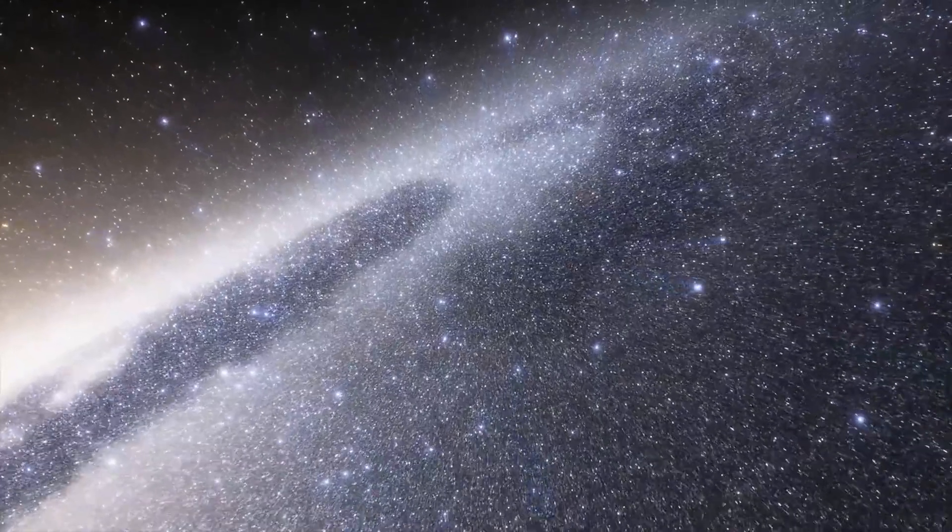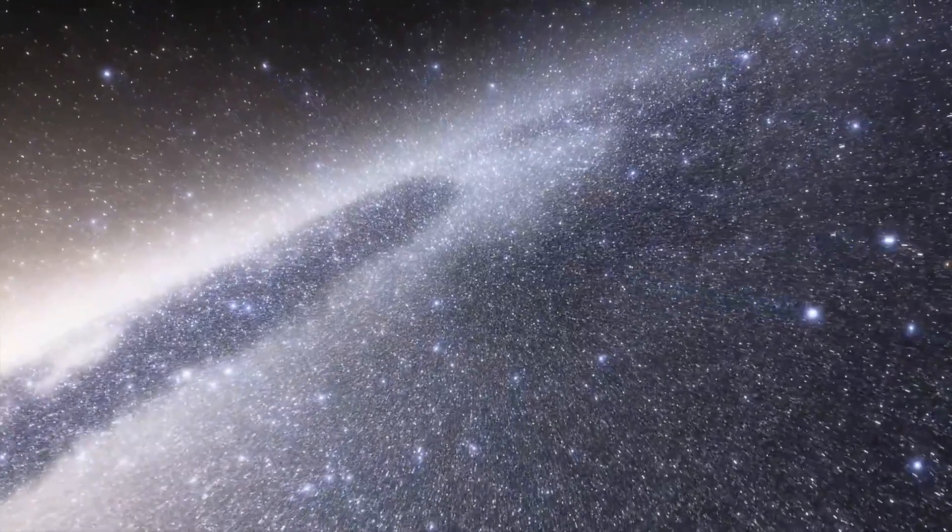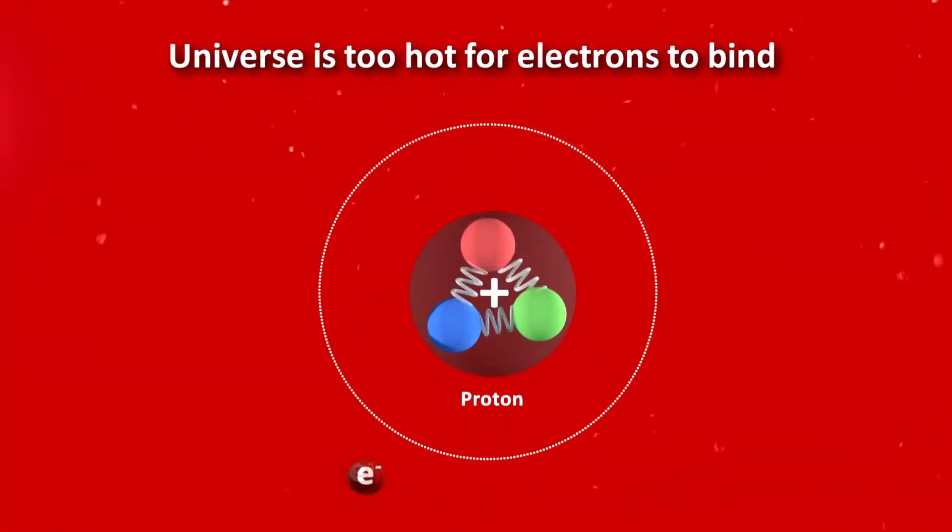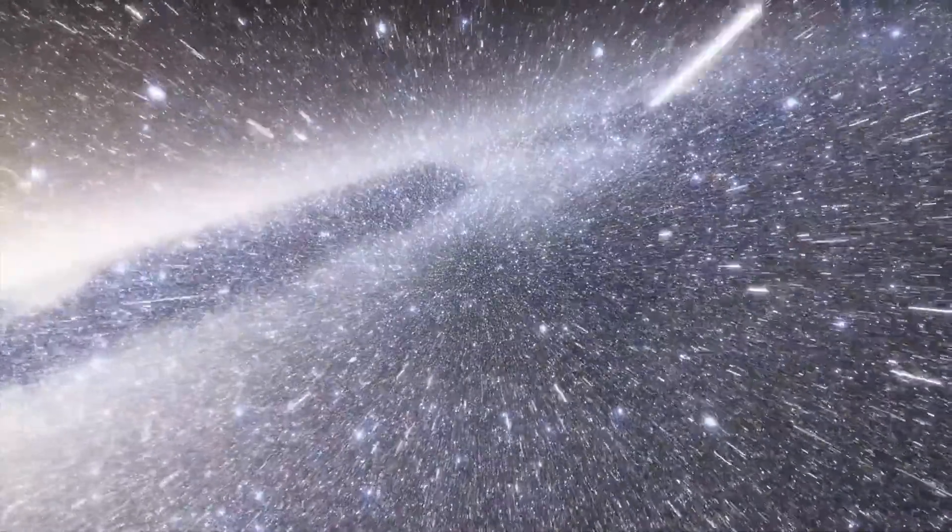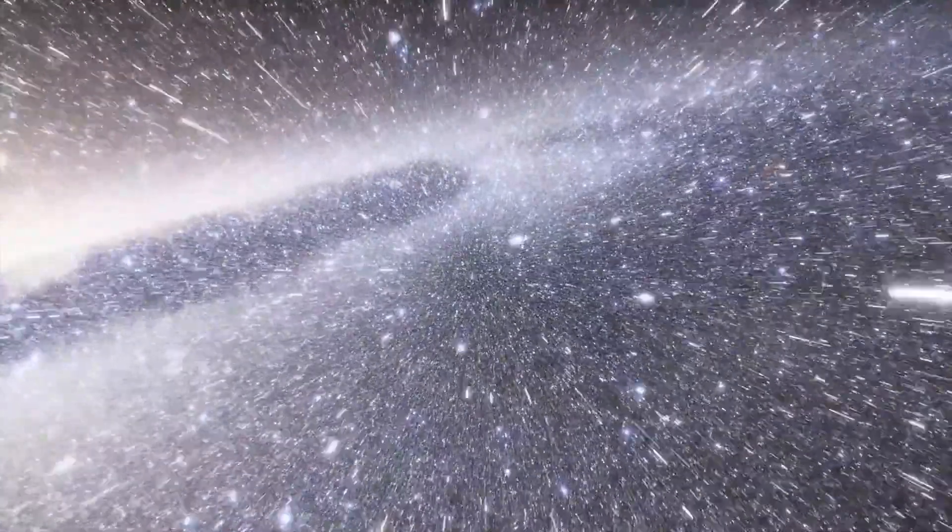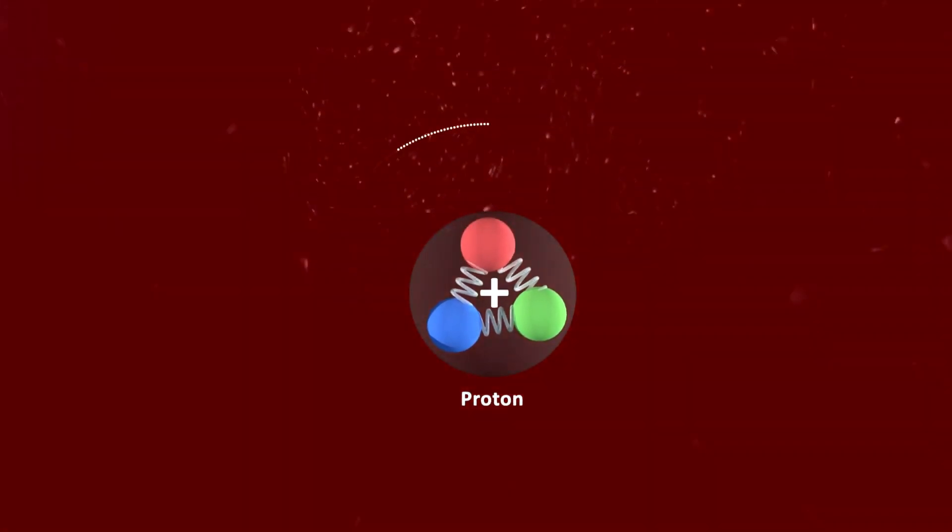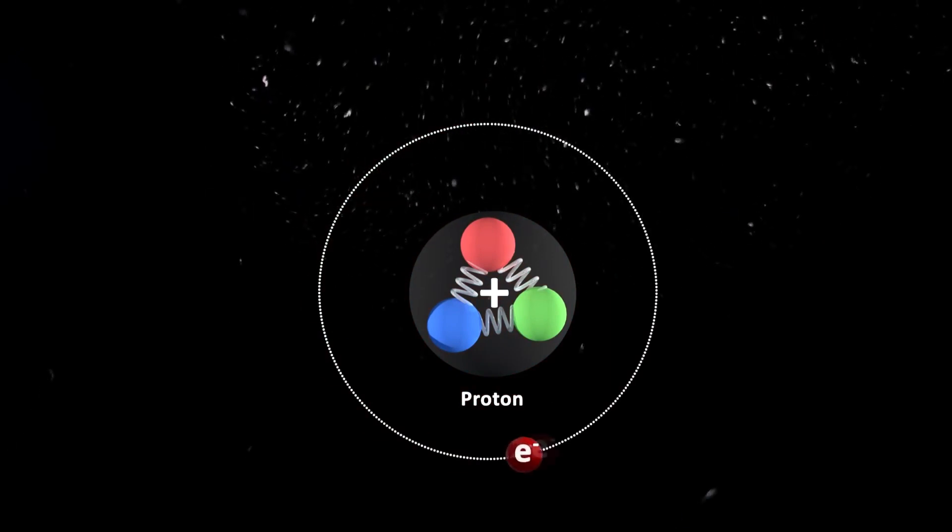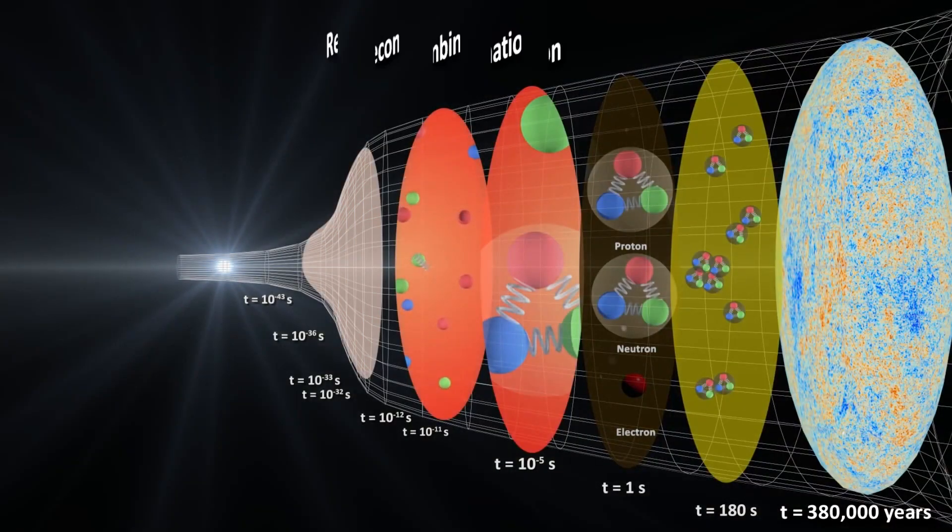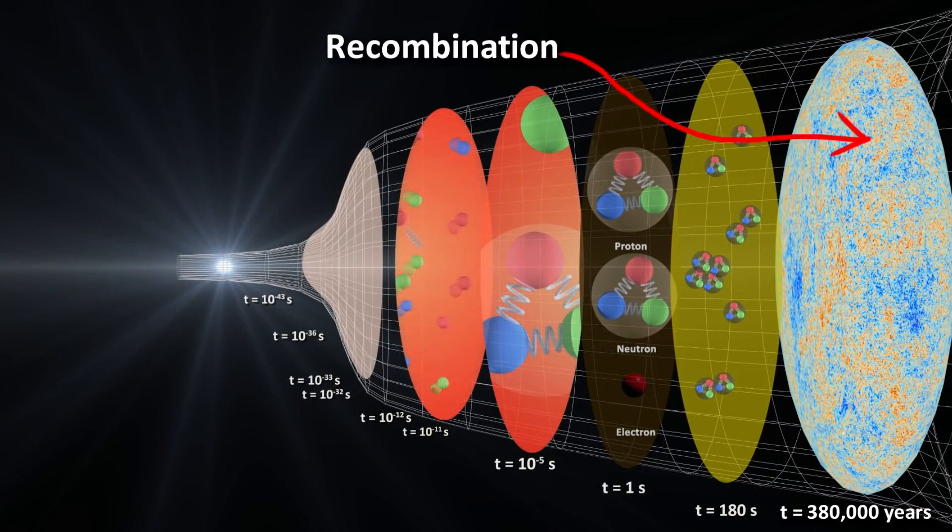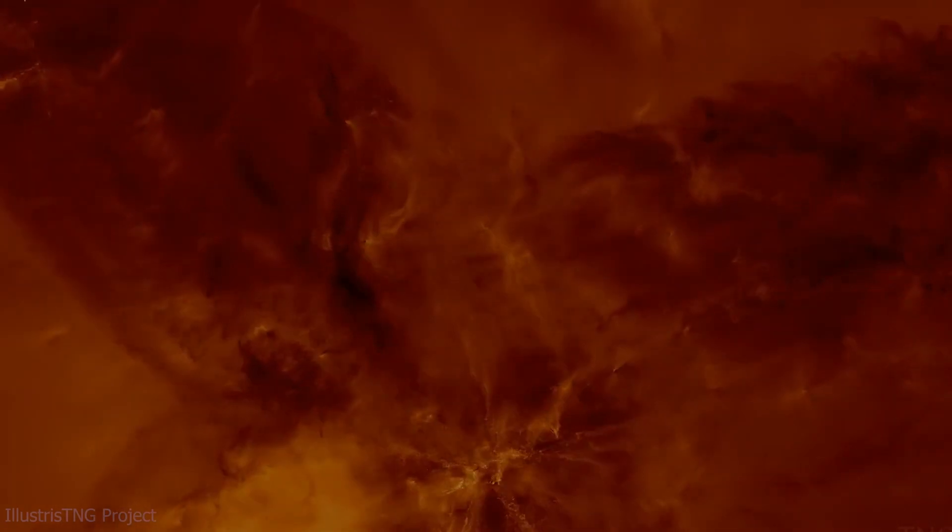The formation of neutral atoms was a game-changer in the universe's history. Before this point, the universe was a hot soup of ionized particles, where light couldn't travel freely. But as it cooled, protons and electrons combined to form neutral atoms, allowing photons, the particles of light, to escape and travel across the cosmos. This moment, known as recombination, was like the universe lifting a veil, allowing light to embark on its endless journey.